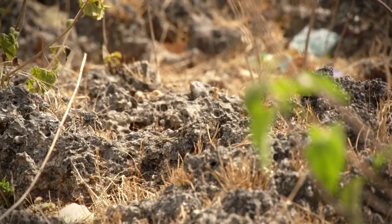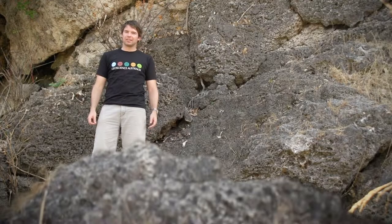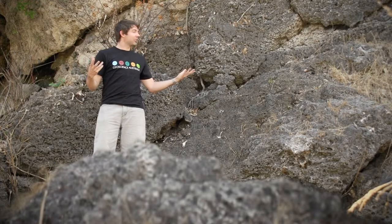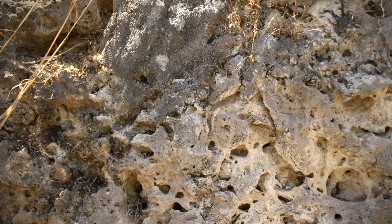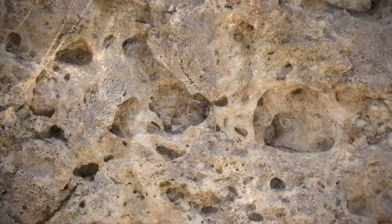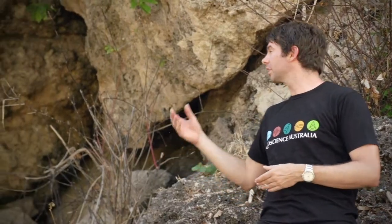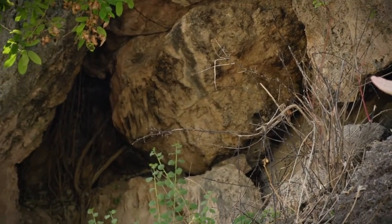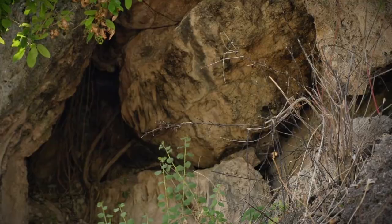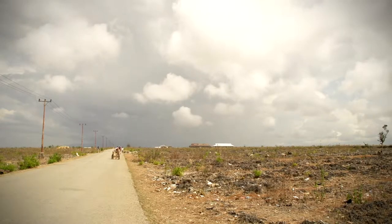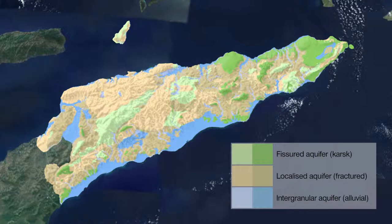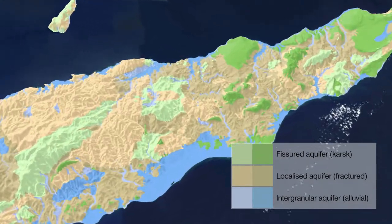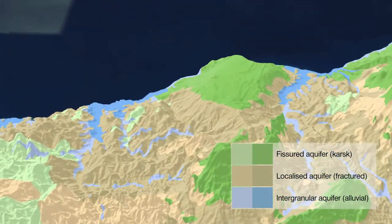Limestone is an important aquifer in Timor-Leste. When the rain falls, it's soaked straight into this porous rock. Also importantly, the rainwater dissolves the rock, so much so that it forms large caves. These are called the fissured karst aquifers and are most common in the east of Timor-Leste.